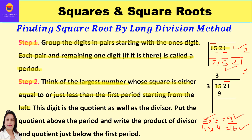This digit is the quotient as well as the divisor. Put the quotient above the period and write the product of the divisor and quotient just below the first period. So we write 3 as the divisor and also as the quotient, and 3×3=9 is written just below the first period. That completes step 2.